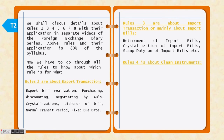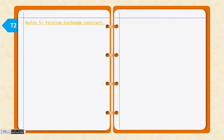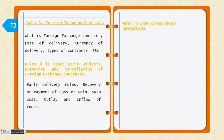Rule number 3 is about import transactions and clean instruments. Rule number 4 and 5 cover clean instruments and foreign exchange contracts including forward contracts, and forward contract cancellation.